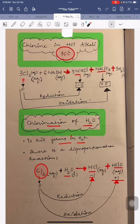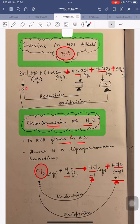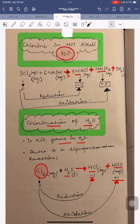Chlorine is reacting with sodium hydroxide, making NaCl and NaClO₃. The oxidation state of Cl in Cl₂ is zero because free elements have an oxidation state of zero. In NaCl, Na is +1 (Group 1 element) so Cl is -1. Therefore Cl is undergoing reduction — it went from 0 to -1.